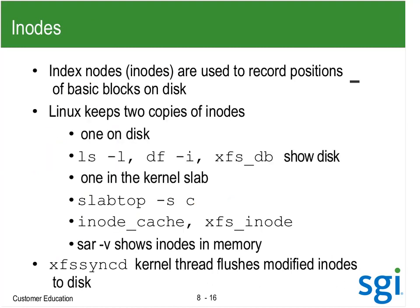There are two copies of the inode: one on disk and one in the slab. With ls-l, df-i, and xfs-db we can see what's out on disk. When in the slab, we use SAR-V, slabtop, and what's in /proc/slabinfo. I was seeing XFS-AILs high but not seeing XFS-SYNC-D or XFS-Log-D — so I wasn't seeing a whole lot of flushing.